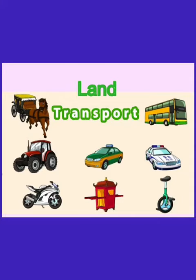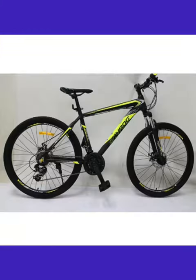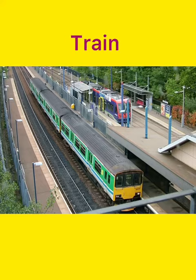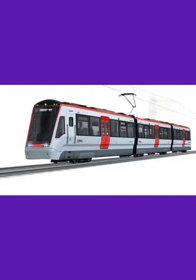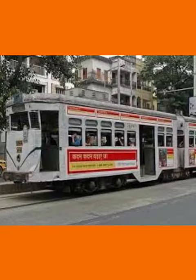Means of land transport are used on land. They include bus, cars, bicycles, tongas, etc., to travel on the road. Trains, metro trains and trains move on the rails. They are called railways.